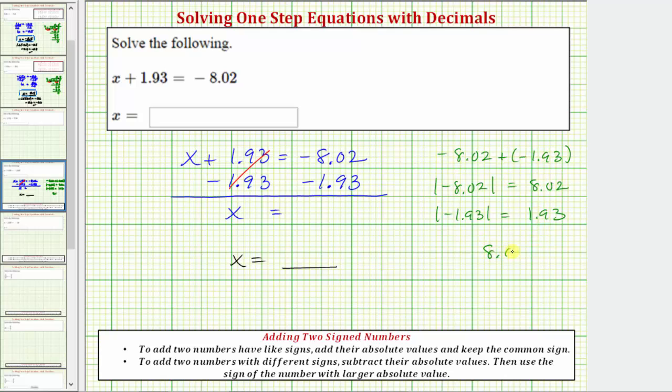So 8.02 plus 1.93. For the first step, let's put the decimal point in the sum, and now we'll add 2 plus 3 is 5, 0 plus 9 is 9, 8 plus 1 is 9. So this sum is 9.95, which means our original sum, or difference, is negative 9.95.